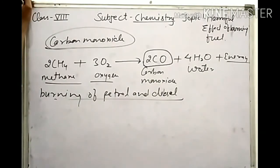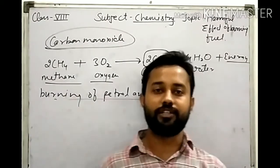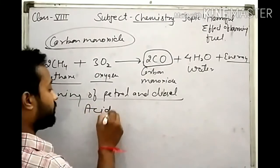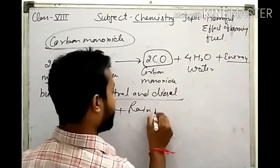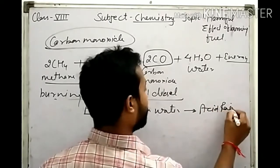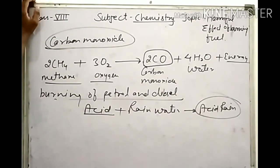Similarly, when we use vehicles, nitrogen dioxide — or oxides of nitrogen — is released. These oxides of nitrogen, when mixed with moisture in the air, form acid. When this acid comes down with rainfall, we call it acid rain. It is very harmful.